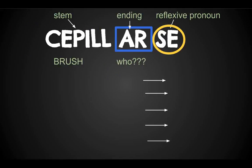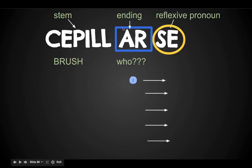Let's really dissect one of these reflexive verbs: 'cepillarse.' We have the stem, like we're used to, and we have the ending, like we're used to. But we also have this extra piece — the reflexive pronoun. Just like we always have done, you change the end of the verb.